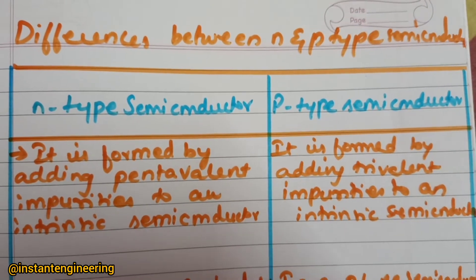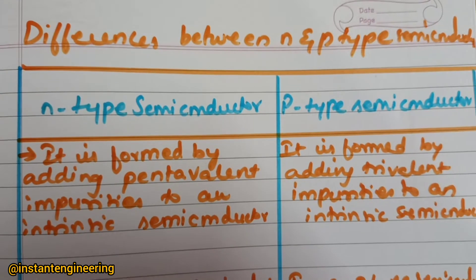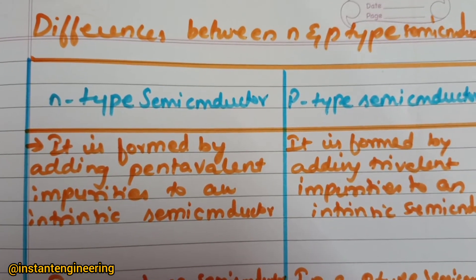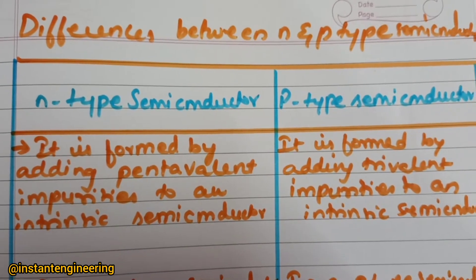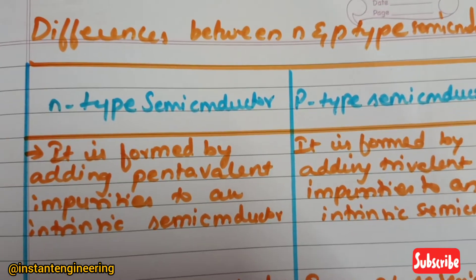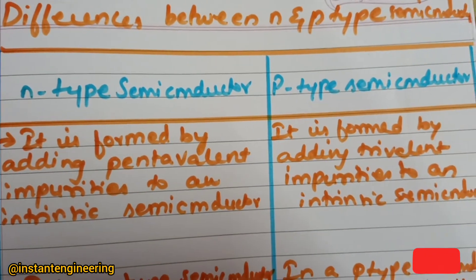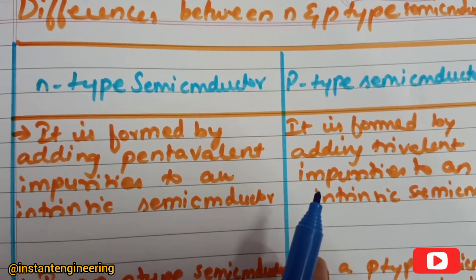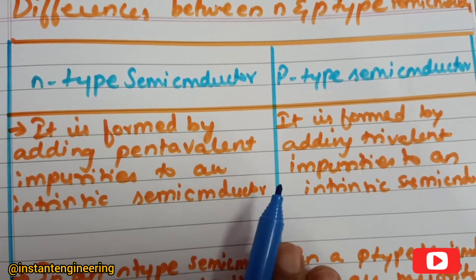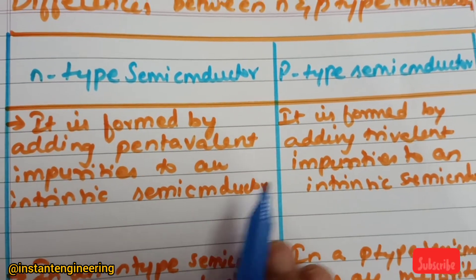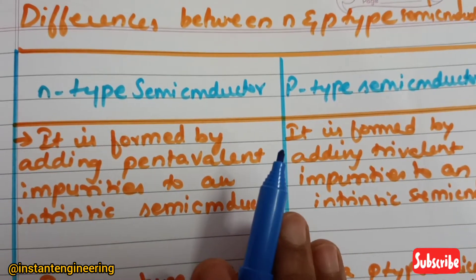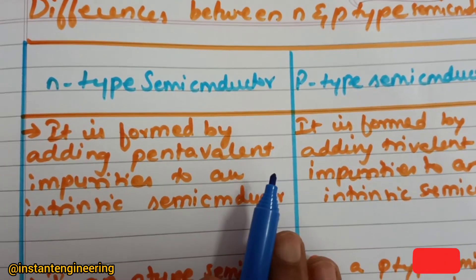Hello everyone, welcome back to my channel. This is the basic difference between n-type and p-type semiconductors. Generally, if anybody asks you what is the difference between n and p type, these are three basic points which I am going to tell you, which are very easy to understand and explain, even in vivas when they ask you this basic difference.